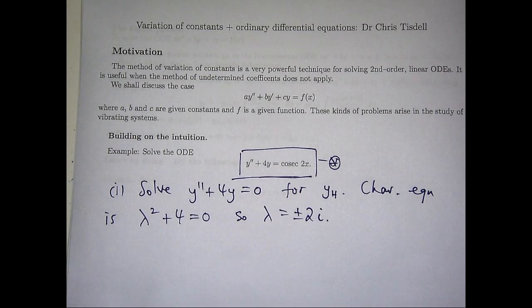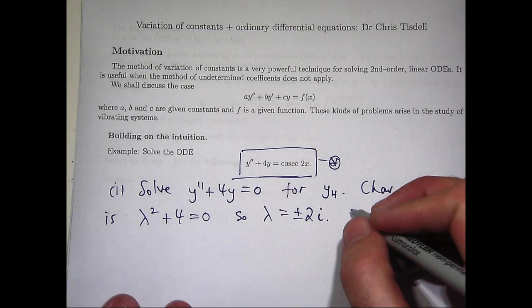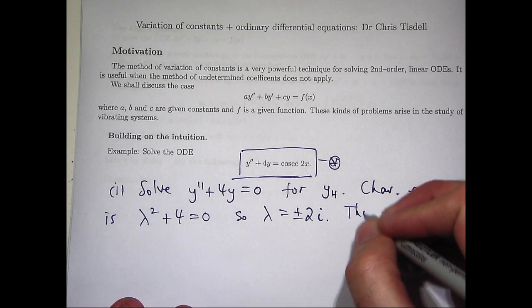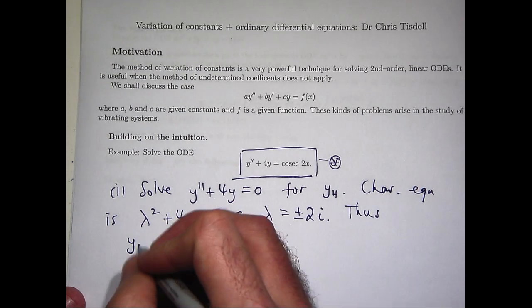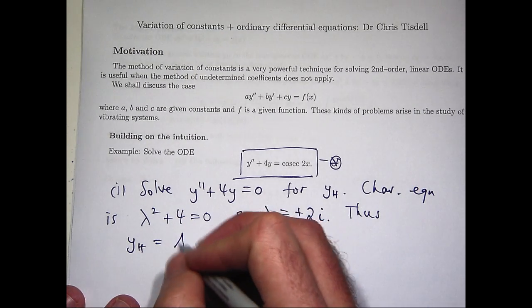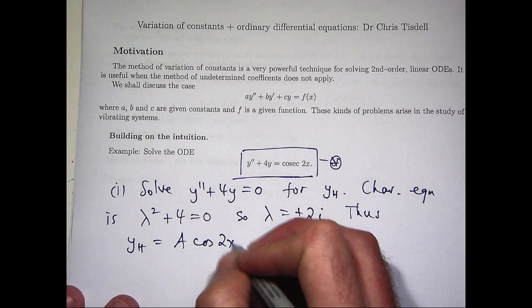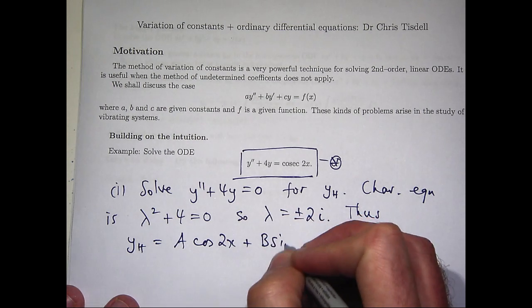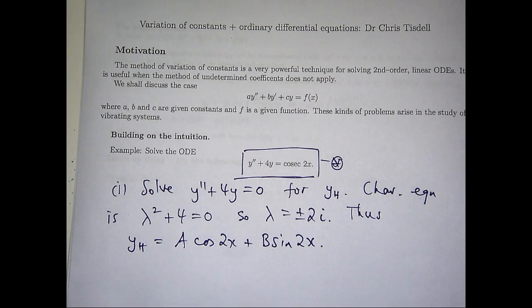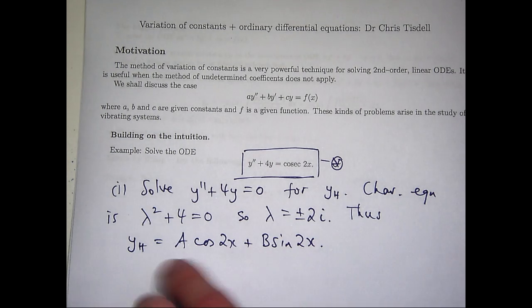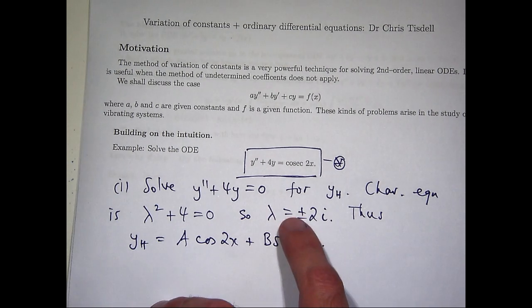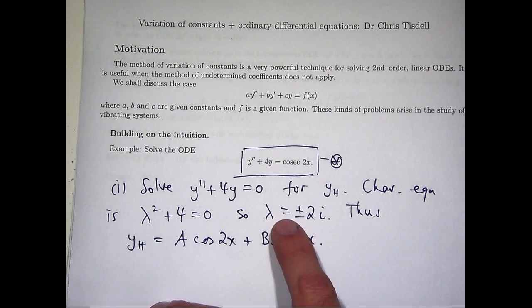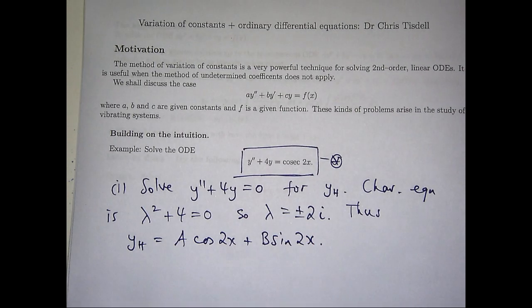So my roots are complex, and hence they have a special form. So yh is going to be something like this. And the reason there's no exponentials in here is because the real part of our roots is just zero. So that's the easy part of the problem.